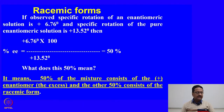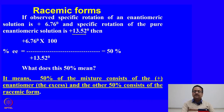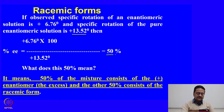Let us see with one example: if the observed specific rotation of an enantiomeric solution is 6.76 degrees and the specific rotation of the pure enantiomeric solution is 13.52 degrees, then what is the enantiomeric excess percentage? Using the formula: 6.76 divided by 13.52 multiplied by 100, which gives you 50 percent.